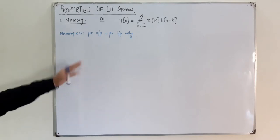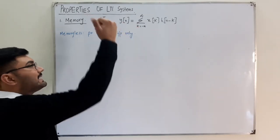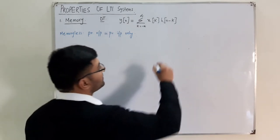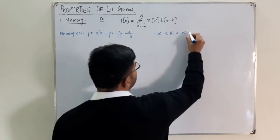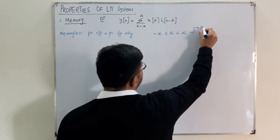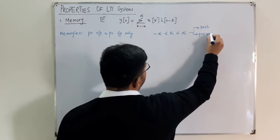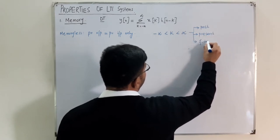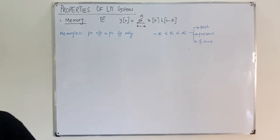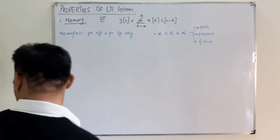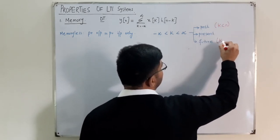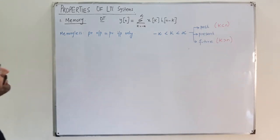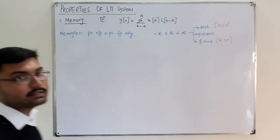In the convolution sum, the variable k ranges from negative infinity to positive infinity, which includes past, present, and future values. When k is less than n, you have the past value. When k is greater than n, you have the future value. What we need for a memoryless system is only the present value, which occurs when n is equal to k.